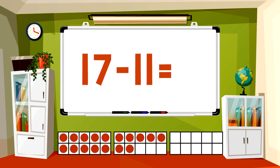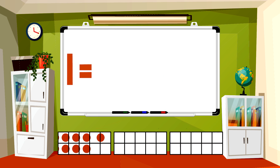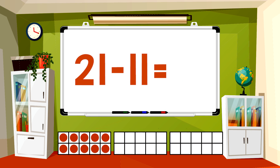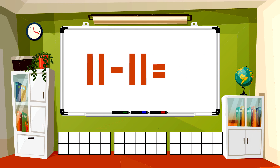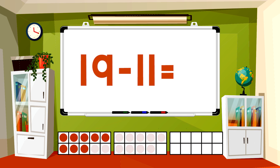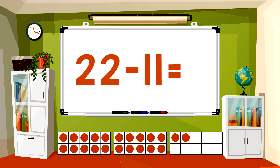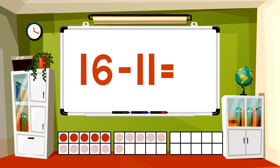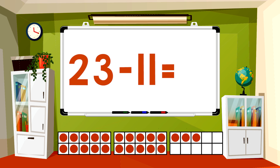20 minus 11 equals 9. 17 minus 11 equals 6. 21 minus 11 equals 10. 11 minus 11 equals 0. 19 minus 11 equals 8. 22 minus 11 equals 11. 21 minus 11 equals 10. 23 minus 11 equals 12.